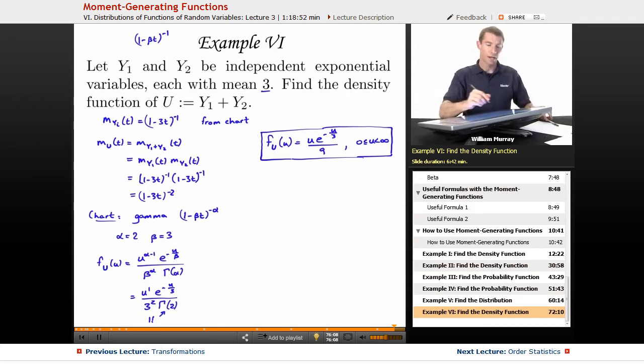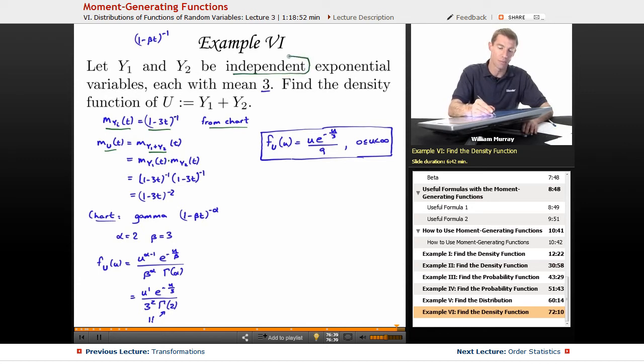Let me review the steps there. I was given that we had exponential variables. So the first thing I did was look up the moment generating function for the exponential variable on the chart, which is 1 minus beta t in general, but beta is the mean of the exponential distribution. So that's 3 in this case. We were given that it was 3. And for u, u is y1 plus y2. So if I want to calculate its moment generating function, it converts addition into multiplication using the fact that we have independent variables there. So I multiply together two copies of 1 minus 3t to the negative 1, and I get 1 minus 3t to the negative 2.